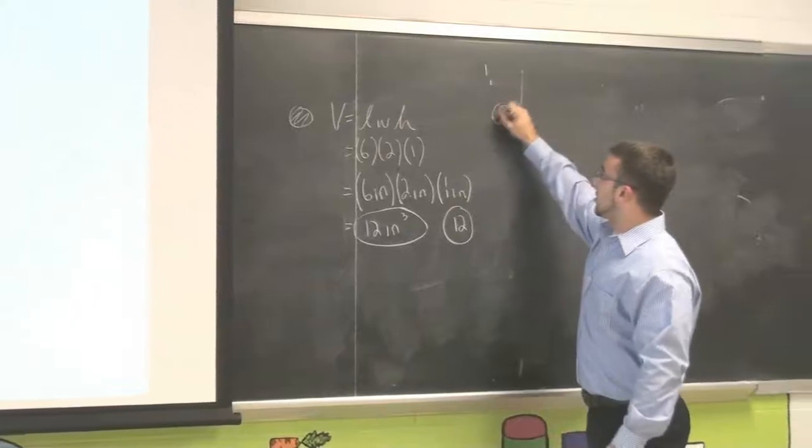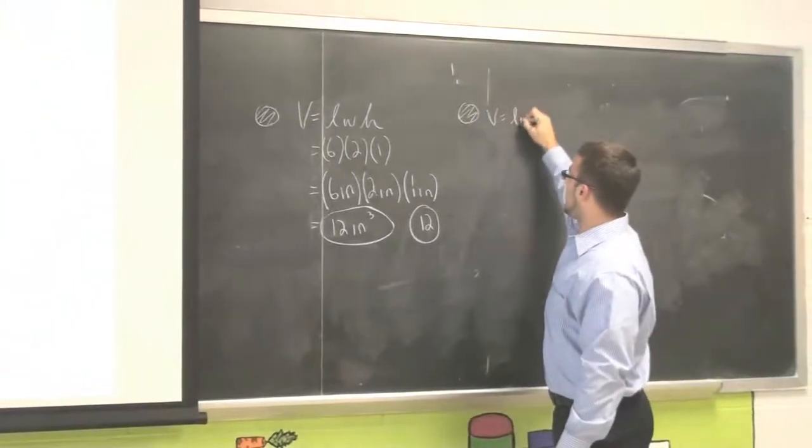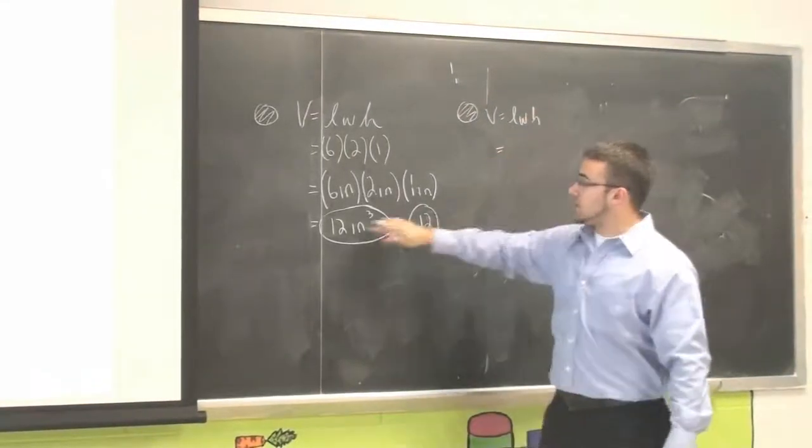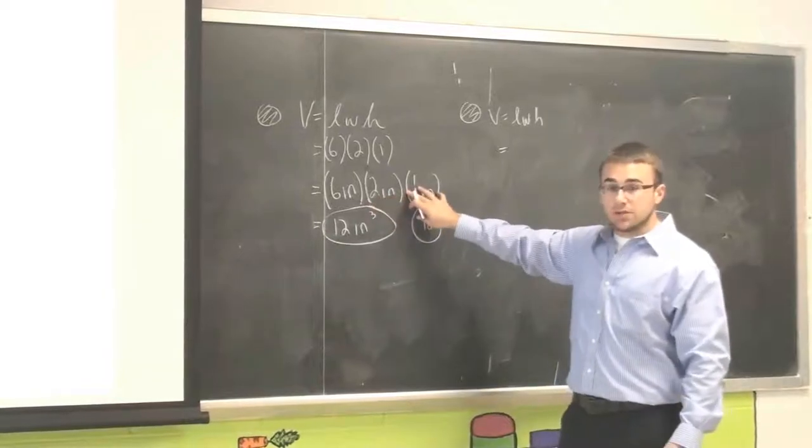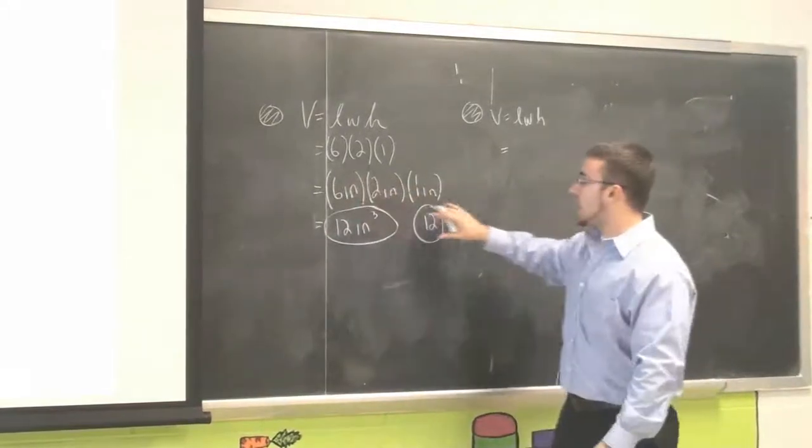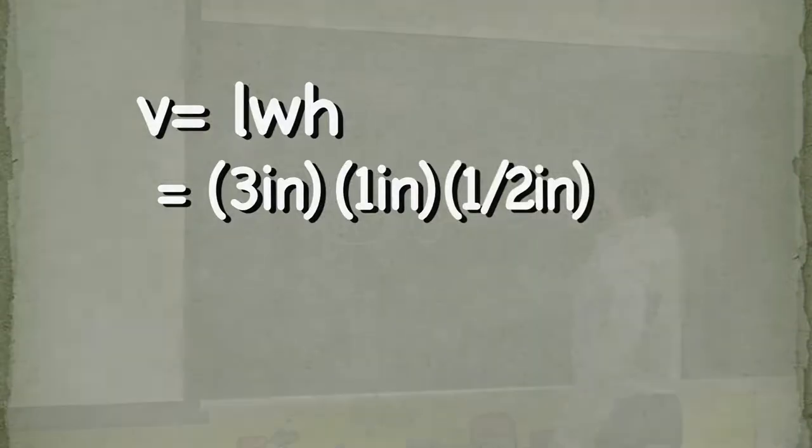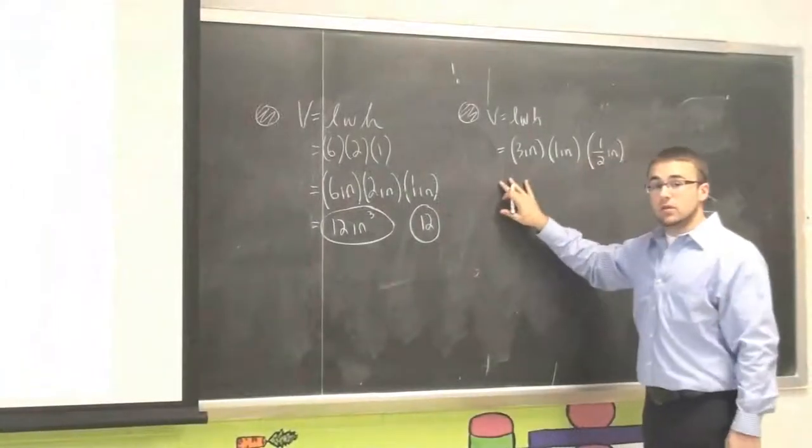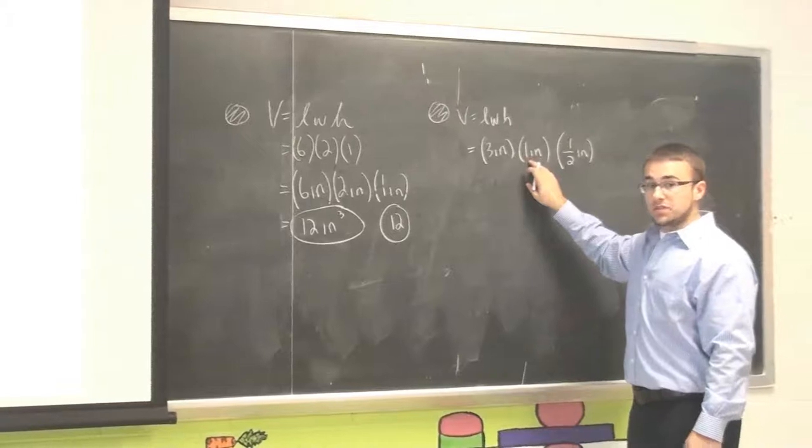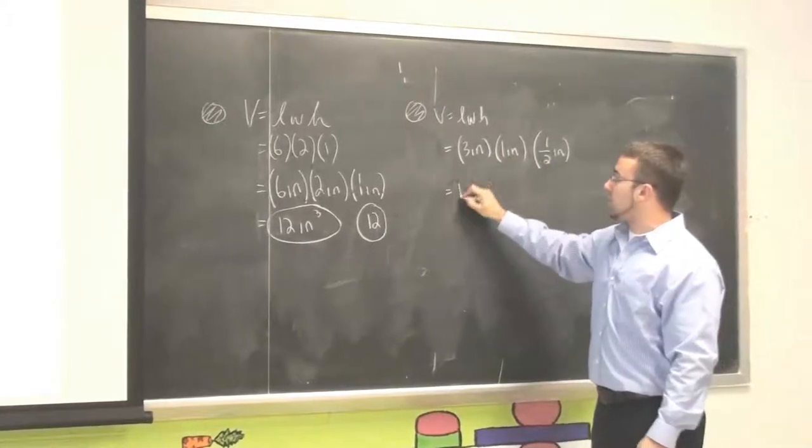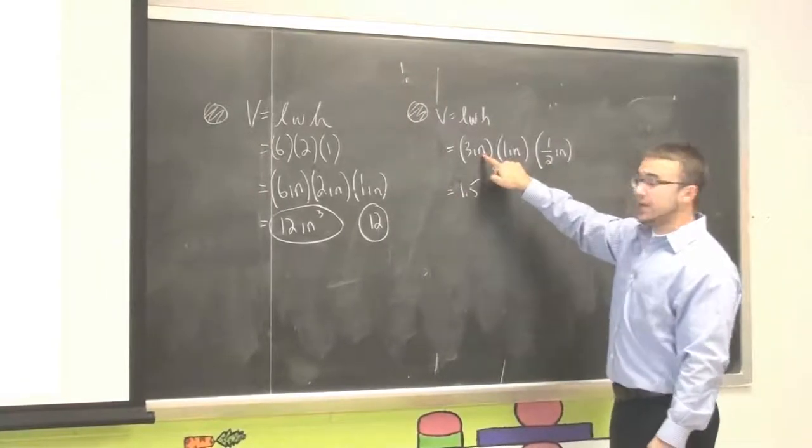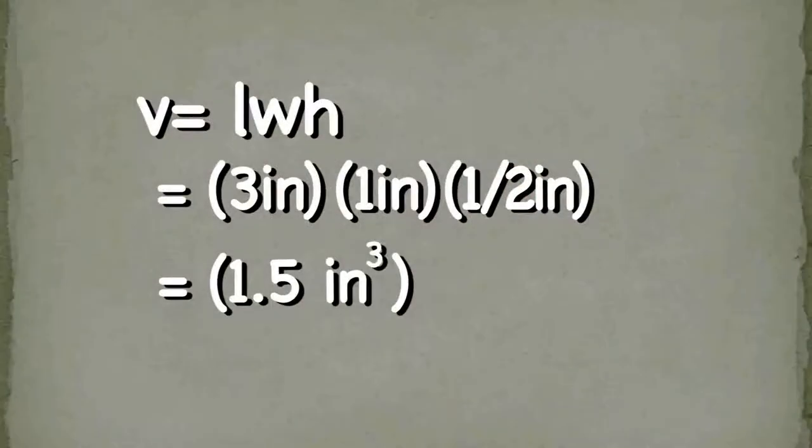So we'll have our volume formula again, but instead of using our six inches, our two inches, and our one inch, we are now taking half of each side. Half of six inches is three inches, half of two inches is one inch, and half of one inch is a half. Again, we're multiplying, three times one is three, half of three is one point five, and again our units, since we're dealing with volume, is going to be cubic inches.